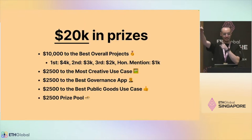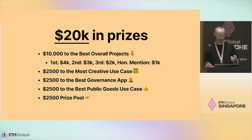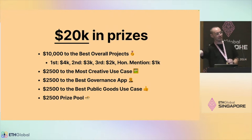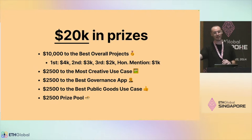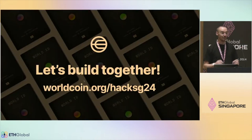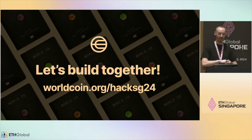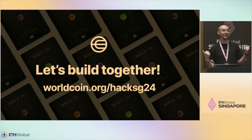We have 20K in prizes. Use WorldID for things where bot resistance or sybil resistance are useful — be creative. We have two separate prizes for governance and public goods use cases. To be eligible for the prize pool, you have to verify the proof and integrate WorldID correctly — make a good faith effort. If you just add IDKit to your package.json and don't do anything with it, you're not getting the prize. You can go to worldcoin.org/hackSG24 to see a Notion page with a lot of the info covered here, including our template repositories. If you have any other questions, come find me at our booth.